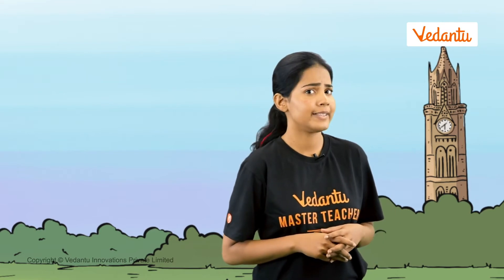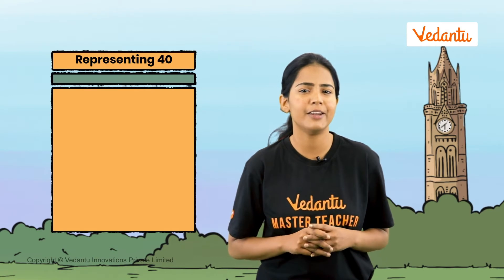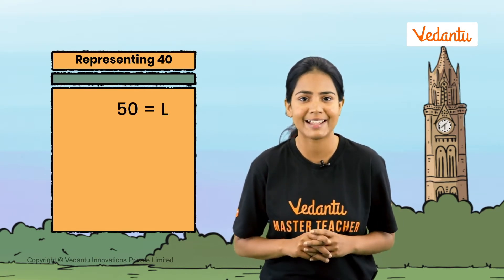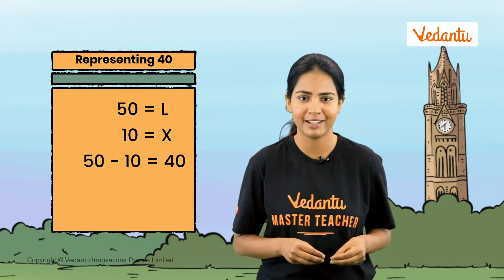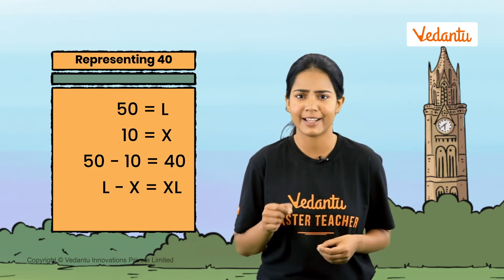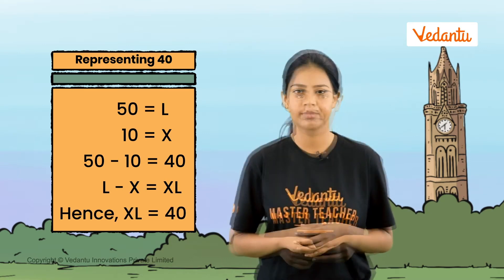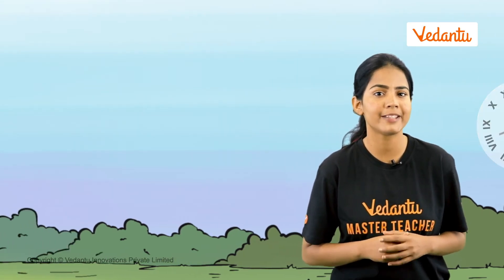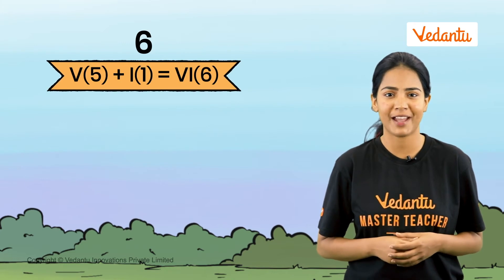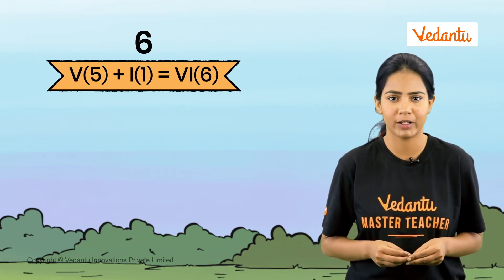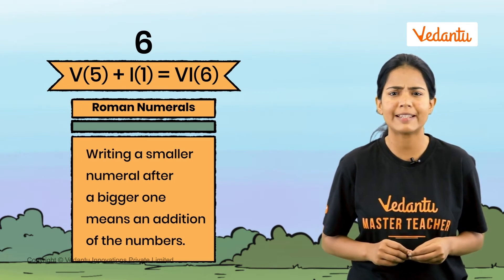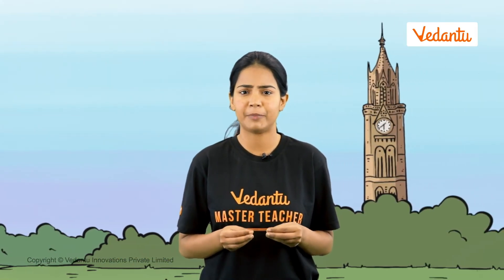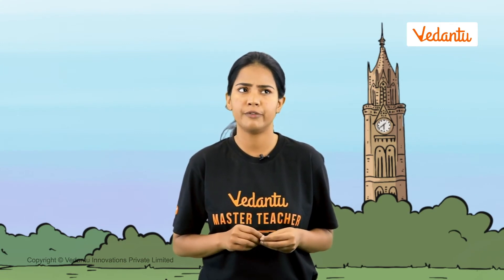What about numbers not on the clock, like 40? We take 50 as L and 10 as X. If we subtract 10 from 50 the answer is 40, so L minus X is written as XL — that is 40. Now coming back to the clock, how about number six? We have five as V and need to add one to it, so we write the smaller numeral I after the greater numeral V. Writing a smaller numeral after a bigger one means addition of the numbers.